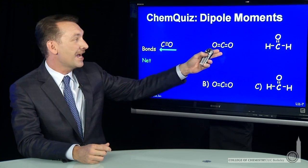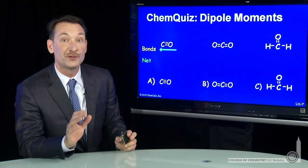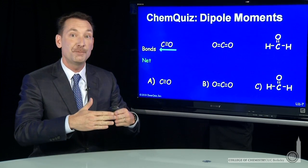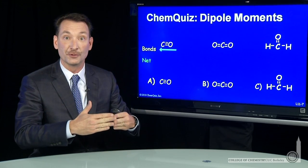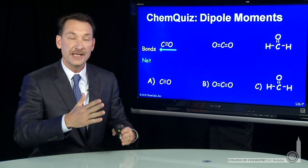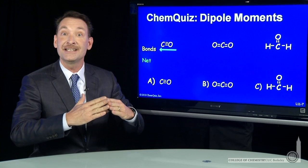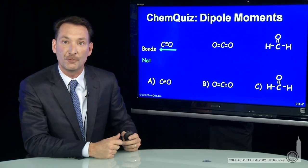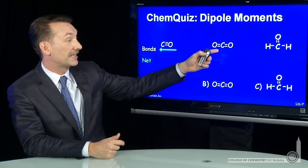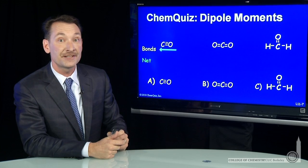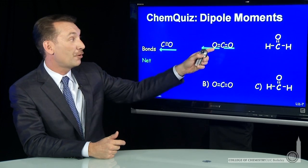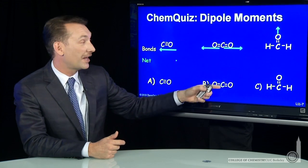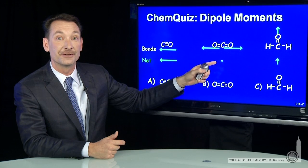Carbon dioxide — here we have two bonds to consider. We need to consider each bond in the molecule. Each bond will be polar and will have a tiny dipole moment that adds to give the total dipole moment for the molecule. In the case of carbon dioxide, the dipole moments are equal and opposite, so they identically cancel out.